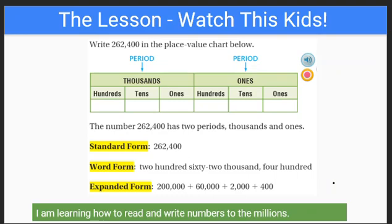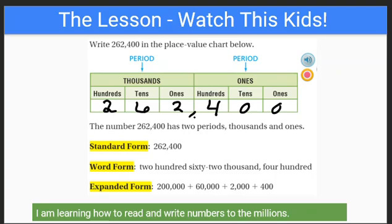We can look at this also. They say write this number and put it in the place value chart. We have two hundred sixty-two thousand four hundred — there's a four and a zero and a zero. Remember that we put a comma every three digits, so one, two, three, and there's a comma right there. This is the ones period right here, and this is the thousands period right there. The number is two hundred sixty-two thousand four hundred — a three-digit number, a comma, and a three-digit number.